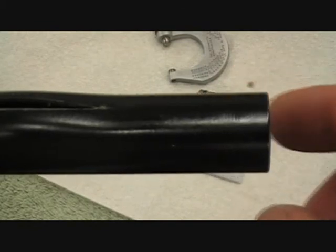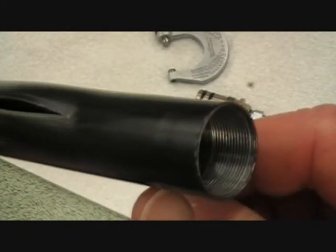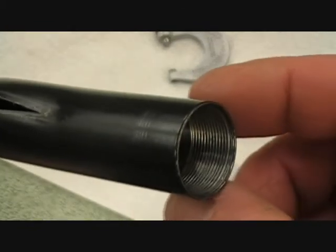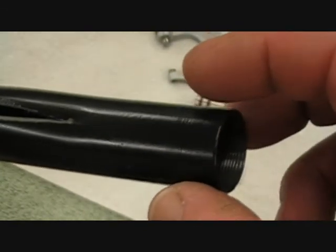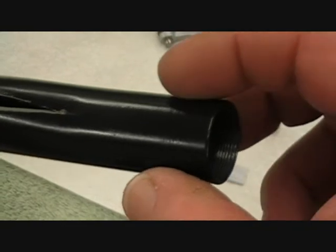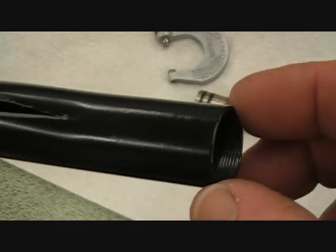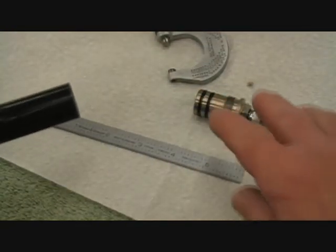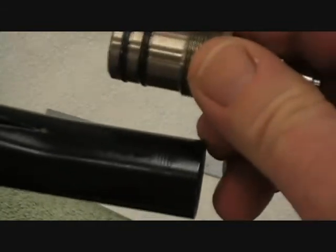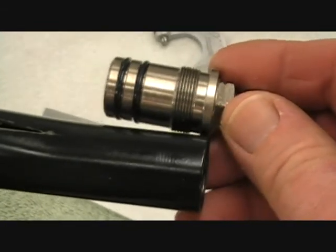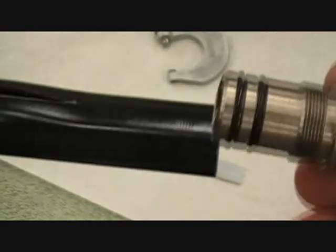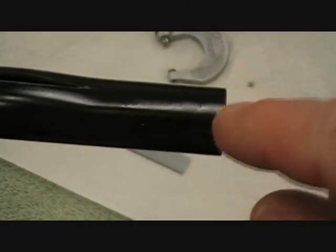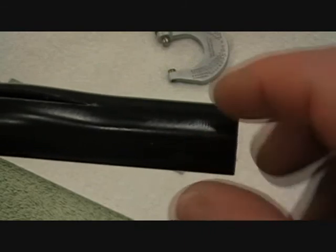Those are actually the threads from inside the tube where this end of the tube was starting to pull off. Because where the threads are, the thread root inside there, that's the thinnest part of the tube. Now there's no pressure in here, but there is axial force on it trying to pull the end off. If you look where these threads line up, this weakening is just passing into the threads.